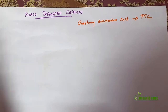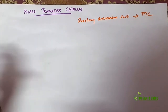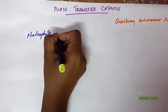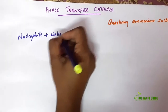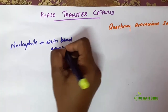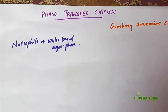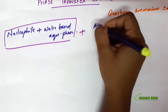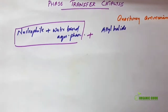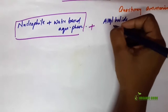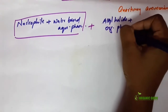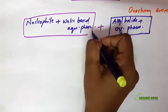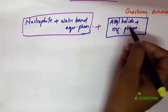What is the use of this phase transfer catalyst? For example, our nucleophiles are one reagent. These nucleophiles are soluble in water-based or aqueous phase — they are soluble in aqueous solvents. But this nucleophile should react with our substrate, that is alkyl halide, which is soluble in organic phases such as benzene or chloroform. So both nucleophiles and alkyl halides are soluble in different phases.